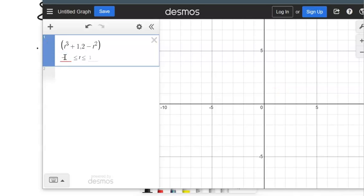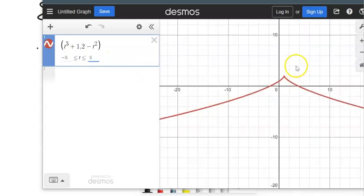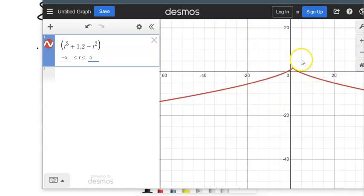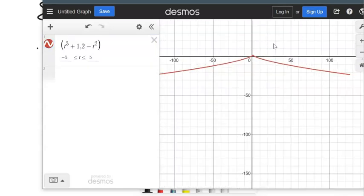t cubed plus 1. And let's run it from negative 5 to 5. OK. And that's what that graph would look like. Crazy little graph.